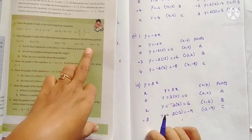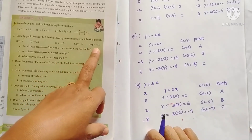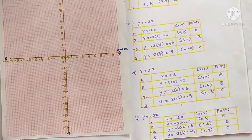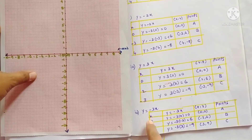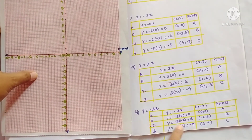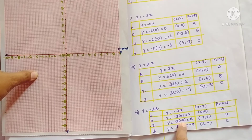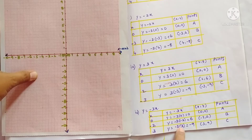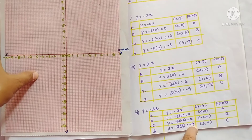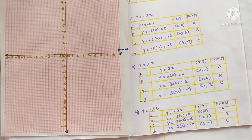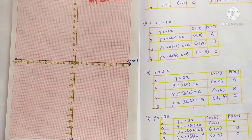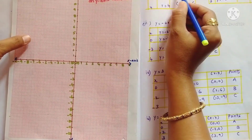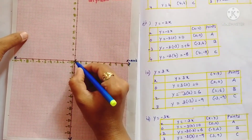For the fifth equation, y = -3x: if x = 0, y = 0. If x = -2, y = -(-3×2) = 6, giving point (-2, 6). If x = -3, y = 9, giving point (-3, 9). Now I'll represent all these points on the graph.